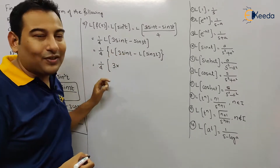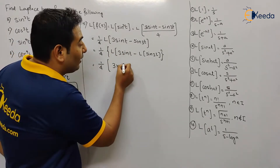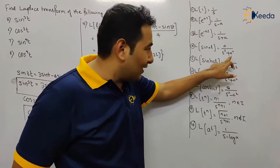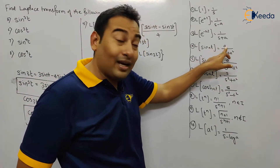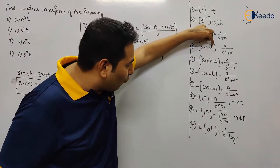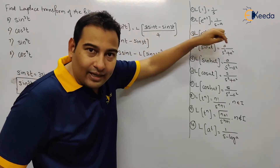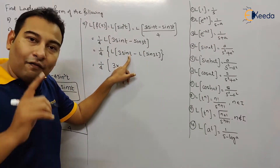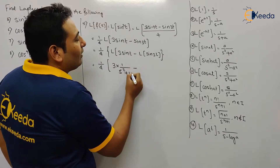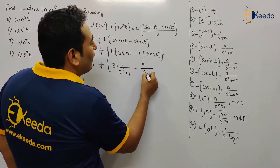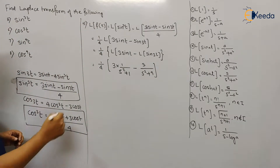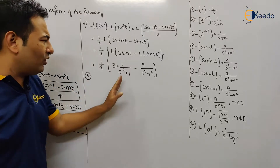The 3 is a constant that comes out of the Laplace transform, leaving Laplace of sin t. Since Laplace of sin at equals a/(s² + a²), for sin t we have a = 1, giving 1/(s² + 1). For sin 3t, Laplace is 3/(s² + 9). So the answer to problem five is (1/4)[3/(s² + 1) − 3/(s² + 9)]. No need to simplify further — keep it as is.